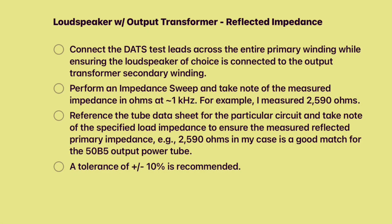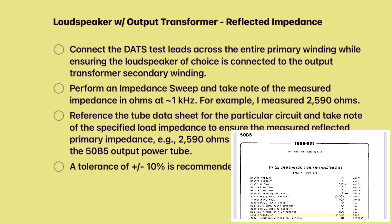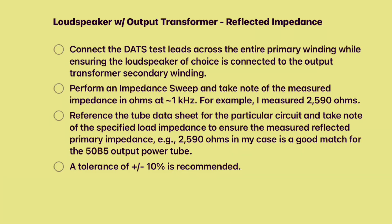That would be the reflected impedance back to the output tube. Knowing the reflected impedance off of the transformer back to the voice coil itself, we can go to the tube manual, pull the data sheet, and find out which tube has a load resistance close to that 2,500 ohms. In this case, this came from a receiver using a 50B5 output power tube — so you can see that's a great match. The loudspeaker voice coil impedance tied back to the output transformer gives us the correct turns ratio, and it's just north of 2,500 ohms, which is a great match for the 50B5.